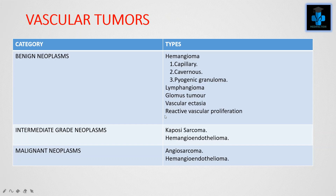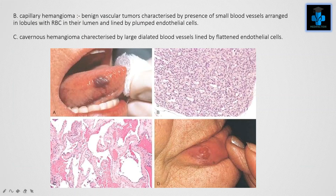Now let's move on to vascular tumors. These are characterized into benign neoplasms, intermediate grade neoplasms, and malignant neoplasms. Benign types include hemangioma, lymphangioma, glomus tumor, vascular ectasia, and reactive vascular proliferation. Hemangioma subcategories include capillary hemangioma, cavernous hemangioma, and pyogenic granuloma. Intermediate grade neoplasms include Kaposi sarcoma and hemangioendothelioma. Malignant neoplasms include angiosarcoma and hemangioendothelioma.